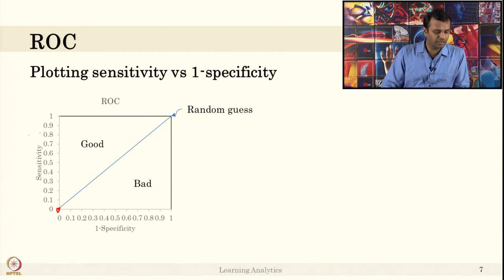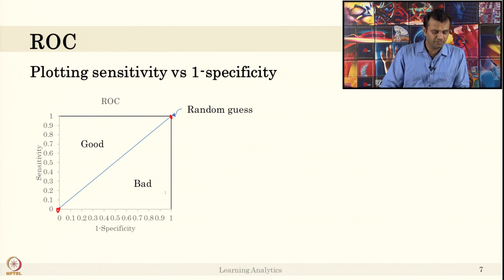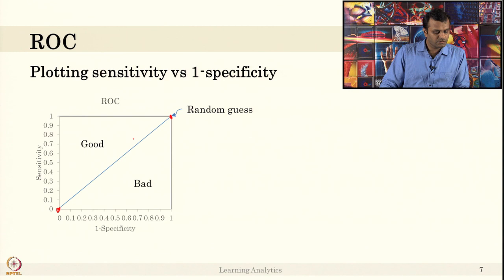Similarly, if you have very good recall but very poor specificity — specificity near 0 — then 1 minus 0 equals 1, placing it at the far right. Having a classifier with either very good sensitivity or very good specificity alone is not good. Values lying below the diagonal line indicate the classifier is performing badly, while values above this line indicate good performance.